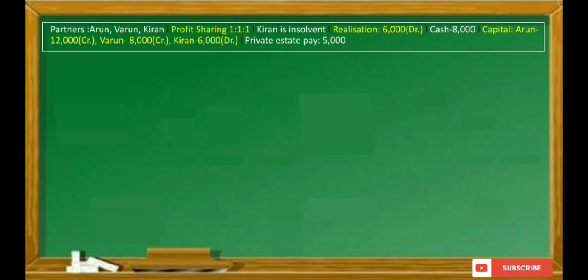The realization amount shows a 6,000 debit balance, which is the realization loss. Cash balance is 8,000. Capital balances are: Arun 13,000 credit balance, Varun 8,000 credit balance, and Kiran 6,000 debit balance. The private estate pays 5,000. In this problem, the realization loss is directly given, so we do not need to prepare a realization account. Instead, we prepare the Cash Account and Capital Account.